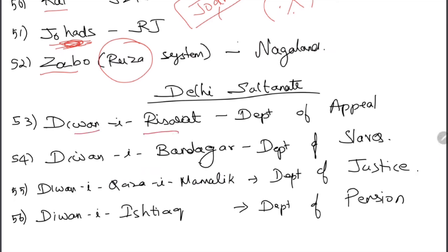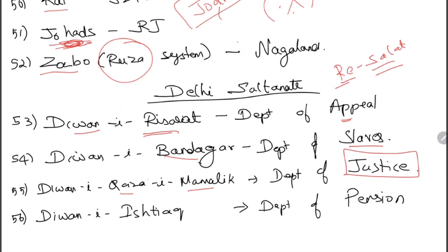In the Delhi Sultanate: Diwani-i-Risalat was the department of appeal — remember 're-appeal' as 're-salat.' Diwani-i-Bandagan was the department of slaves. Diwani-i-Qaza-i-Mamalik was the department of justice — the word 'Qazi/Qaza' always relates to court and justice.